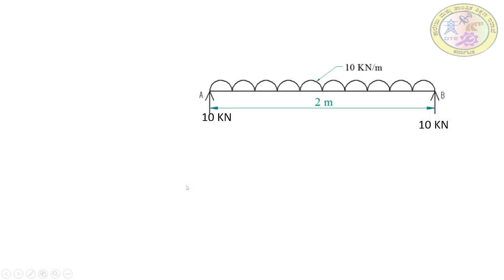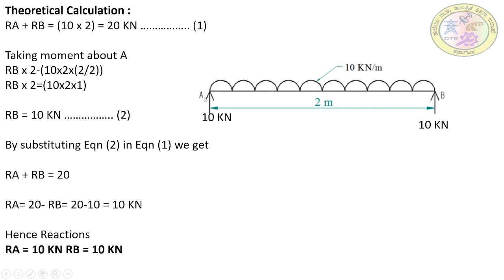Let us move to the theoretical calculation. UDL is represented by this kind of figure, as you can see in theory problems. Before computing the SFD and BMD, we must calculate the load shared by reactions RA and RB at the supports. We label the two support points as A and B — reaction A (RA) and reaction B (RB). Whatever load acts on the beam is shared between these two reactions, and we need to find how much each carries.